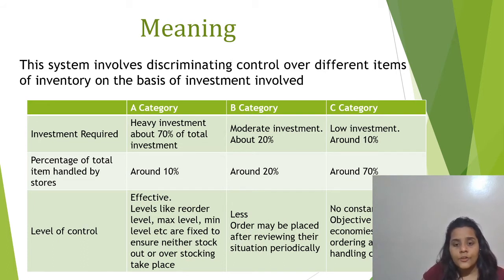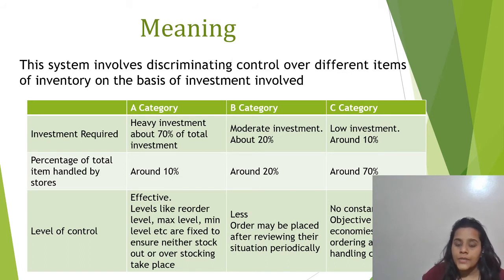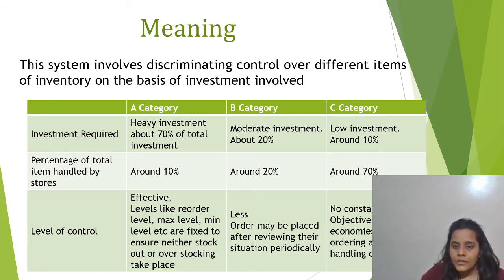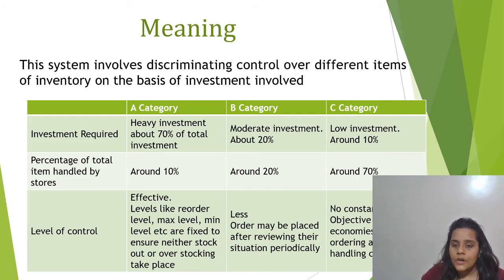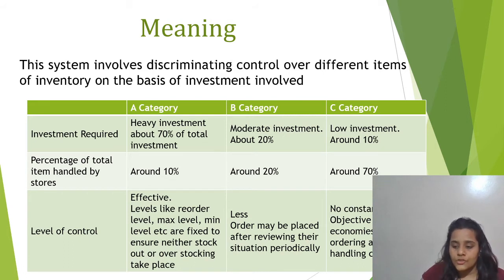In Category B, the level of control is also moderate. Periodic review takes place and orders are placed based on those periodic reviews. In Category C, the investment is the least, but it constitutes the bulk of the inventory. But since investment is low, there is no constant control.